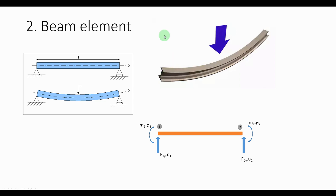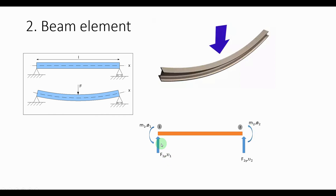Here we have the beam element — this is a picture of what a beam element looks like, and another one where the beam is deformed. This is the main element we will analyze, which has a vertical force acting at each node, called f1y and f2y, and also a moment acting at each node. I've also added the displacements v1, v2, φ1, φ2, which are the displacements on the beam.